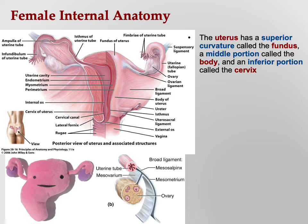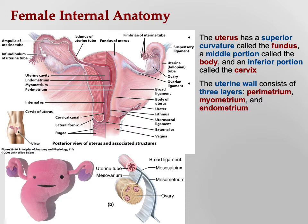The uterine wall consists of three layers: the parametrium, myometrium, and endometrium. The parametrium is the outer layer separating it from the abdominal-pelvic cavity. The myometrium — myo meaning muscle — is the muscular layer responsible for the contractions of labor. The inner lining is the endometrium, which can cause some issues we'll discuss in a moment.